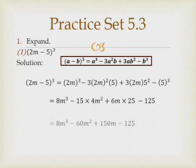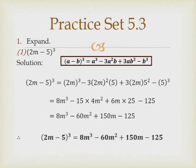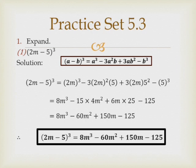Completing the calculation: 15 times 4 is 60, so minus 60m squared. Then 25 times 6 is 150, so plus 150m. The final answer is: (2m minus 5) cubed equals 8m cubed minus 60m squared plus 150m minus 125. Box this answer, and ensure your equal signs are aligned below each other.